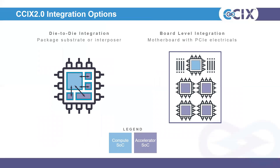Looking at these two architectures from a device view rather than a logical architecture view: on the left, a typical SOC package contains a combined compute element with four acceleration elements, using in-package PHY technology with CXL 2.0 to create a scalable system. On the right is the board-level integration leveraging PCIe electricals. From a connectivity perspective it looks the same as CXL 1.1, but what CXL 2.0 really enables is a lower latency connection between these different elements.